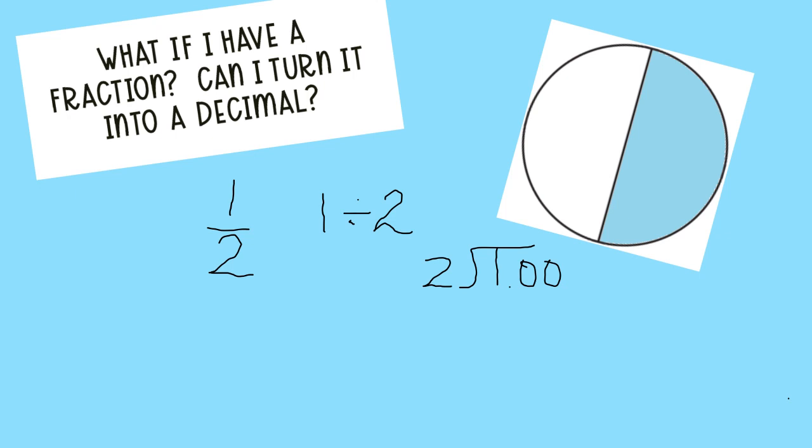When you're dividing by decimals, remember that decimal point just stays right on top of where it is. So the decimal point in your quotient is right on top. Just put it there. And then you can ask yourself, hmm, two into ten. Well, I know two goes into ten five times.